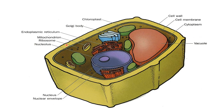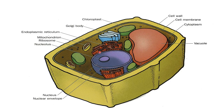Now we will talk about plant cells. In front of you is the plant cell. A plant cell has a cell wall — that is the outer layer — and then in the inner layer there is a cell membrane. Then the matrix, known as cytoplasm. There is also a vacuole, chloroplast, Golgi body, endoplasmic reticulum, mitochondria, nucleus, and nuclear envelope. This is a complete plant cell.